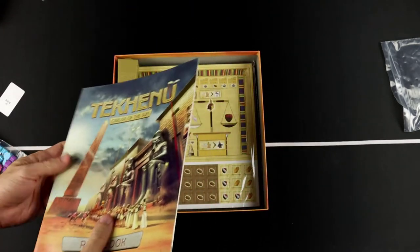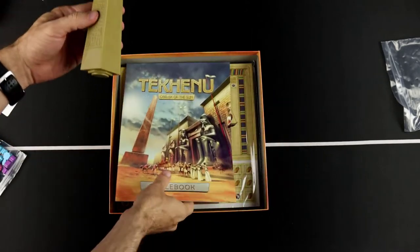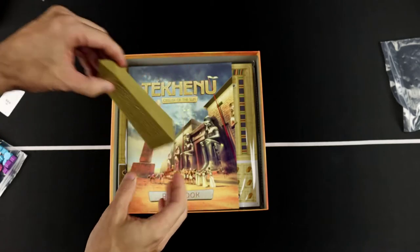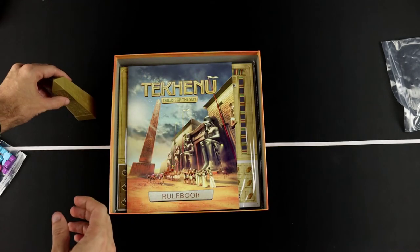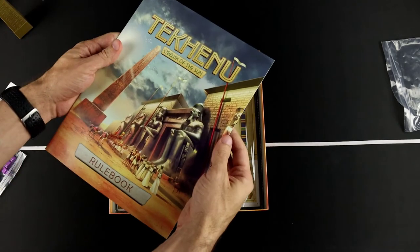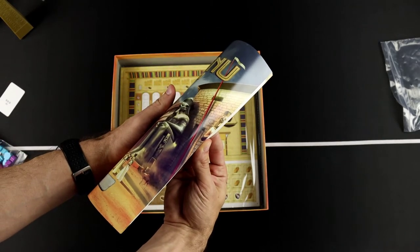All right, let's take a quick look at the rule book here. Actually, before we do that, we've got a literal obelisk that we will set out, I believe, in the center of the board somewhere. So we'll take a look and see how that works out. Let's look through the rule book here for a second.